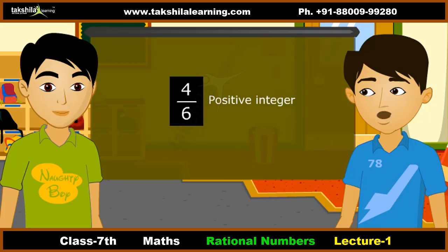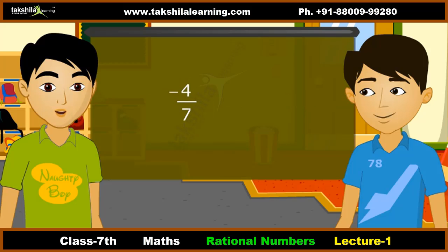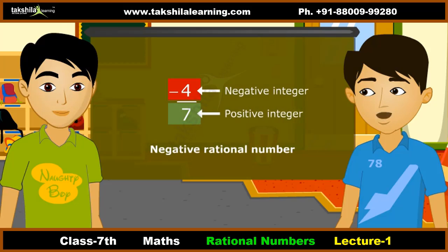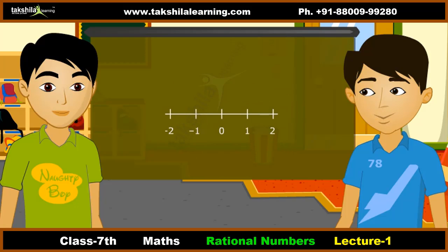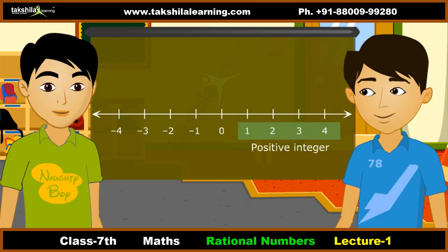Negative rational numbers are those where the numerator is a negative integer and the denominator is a positive integer — for example, minus 4 by 7. To represent a rational number on a number line: points on the right side of 0 are positive integers and points on the left side of 0 are negative integers.